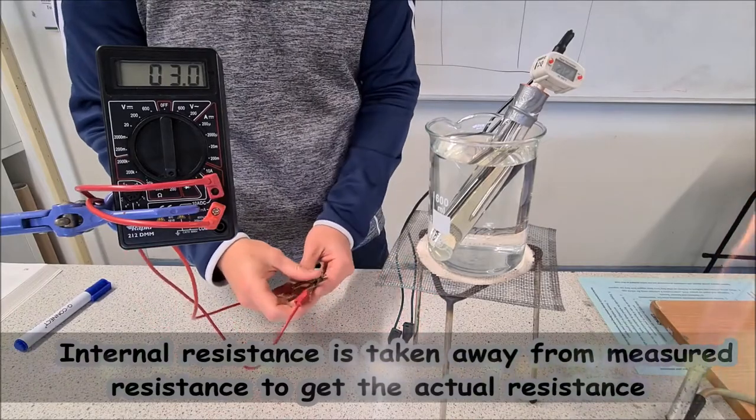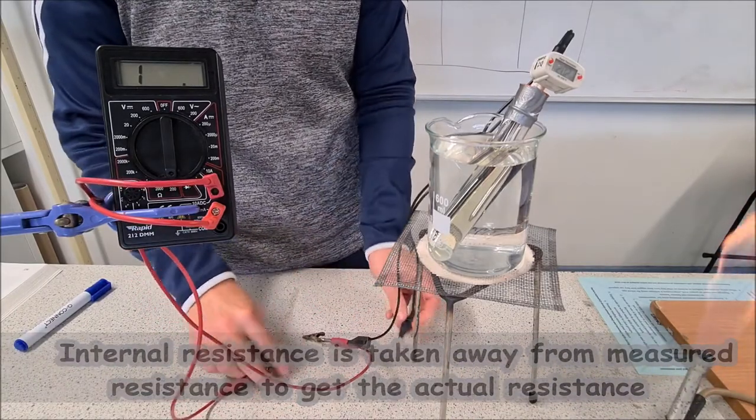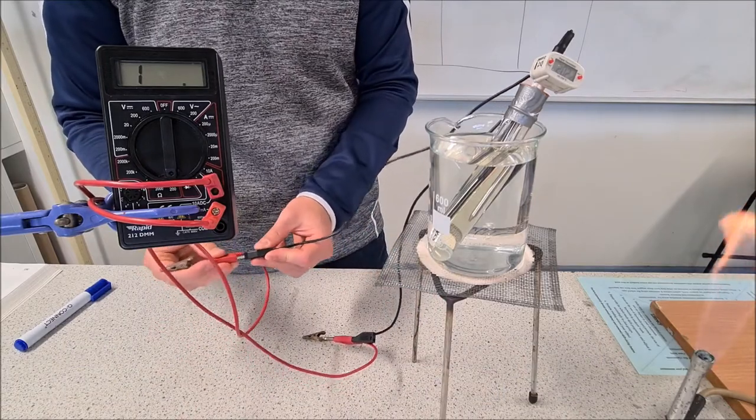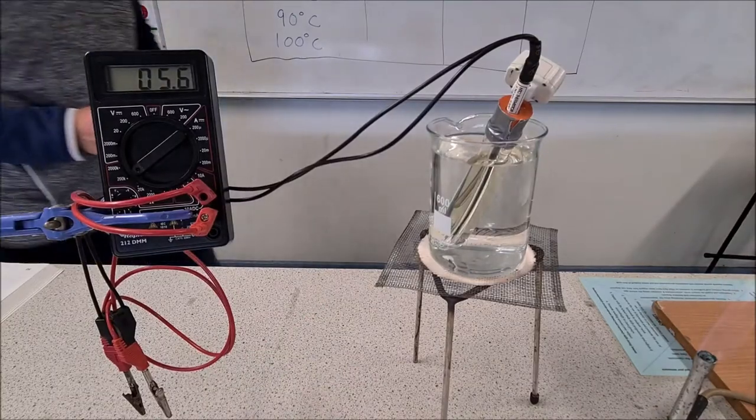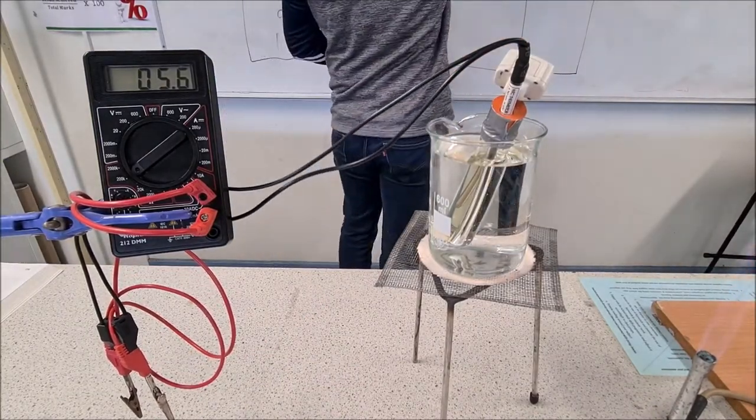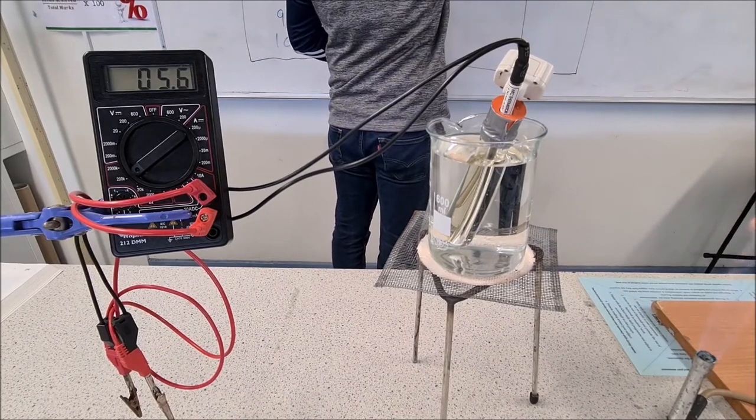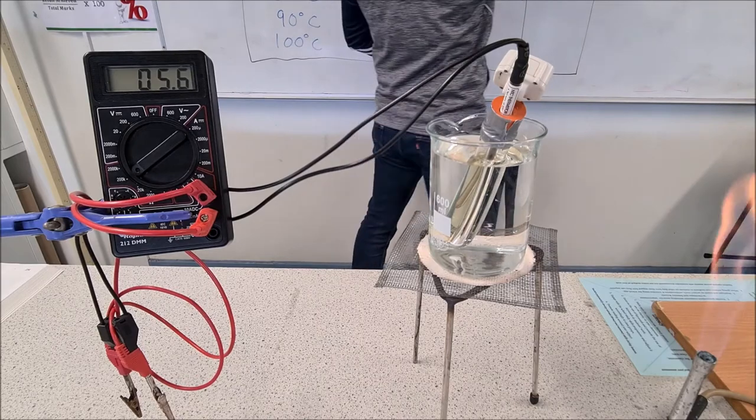Now I'm going to connect this to the thermistor, and we'll see what it's measuring now. So the resistance at 20 degrees is 5.6 ohms. So what's the actual resistance? It's 4 ohms.